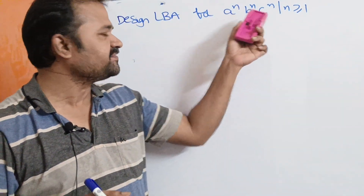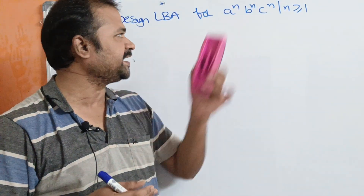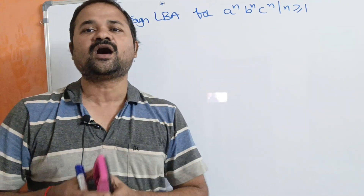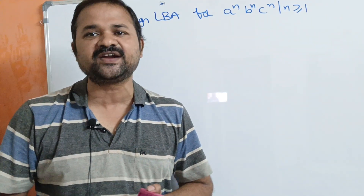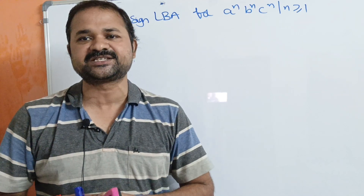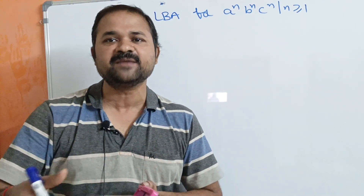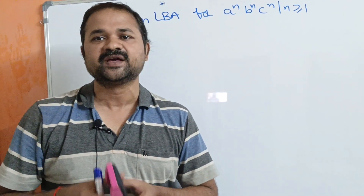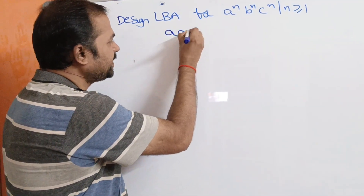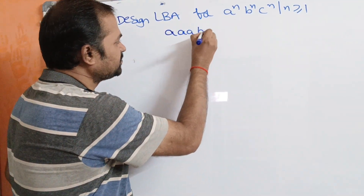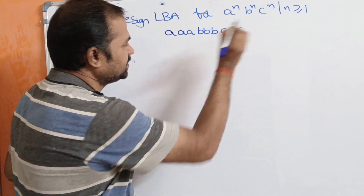Here the language is N number of A's followed by N number of B's followed by N number of C's. So if N is equal to 1, then A, B, C is the string. If N is equal to 2, then A, A, B, B, C, C. If N is equal to 3, then the string is 3 A's, 3 B's, 3 C's.